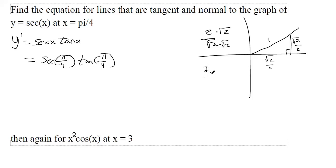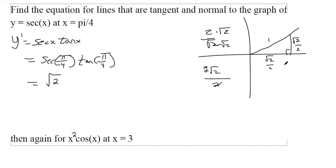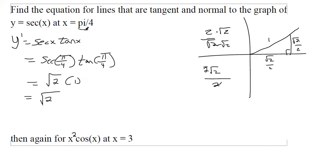In the numerator you get 2√2, and in the denominator √2 times √2 makes 2, so those cancel out. So secant(π/4) = √2. And tangent(π/4): tangent is opposite divided by adjacent, so that's 1. That one's nice and easy. So the slope is √2 at π/4.